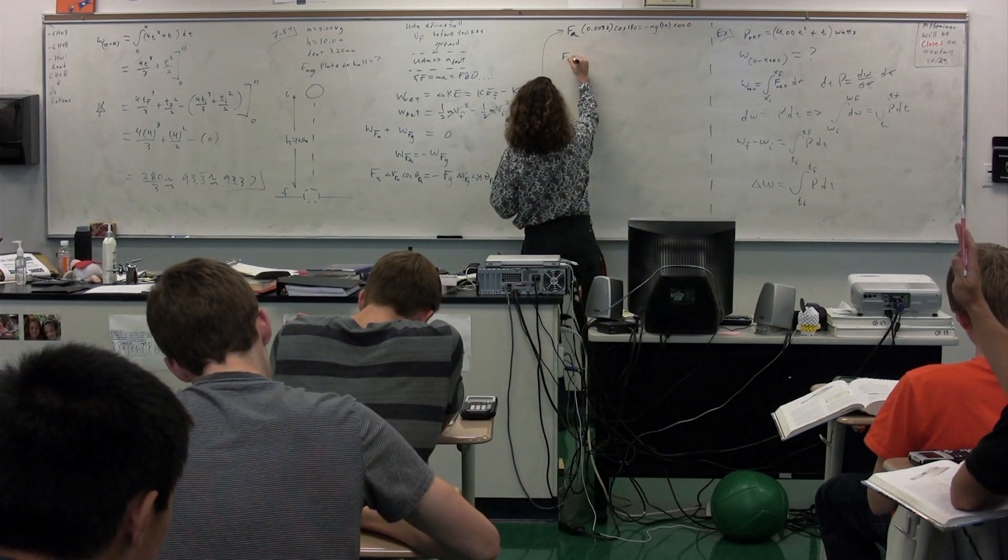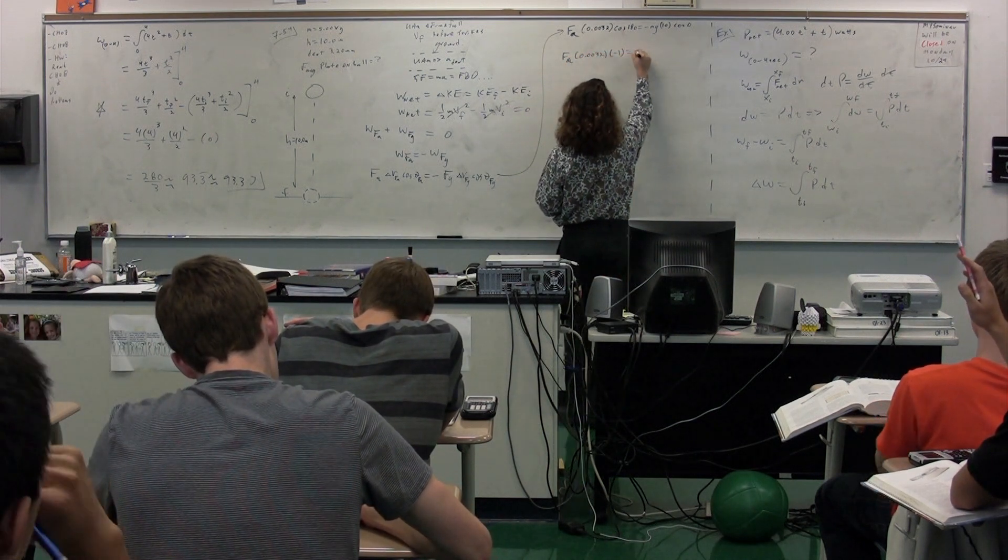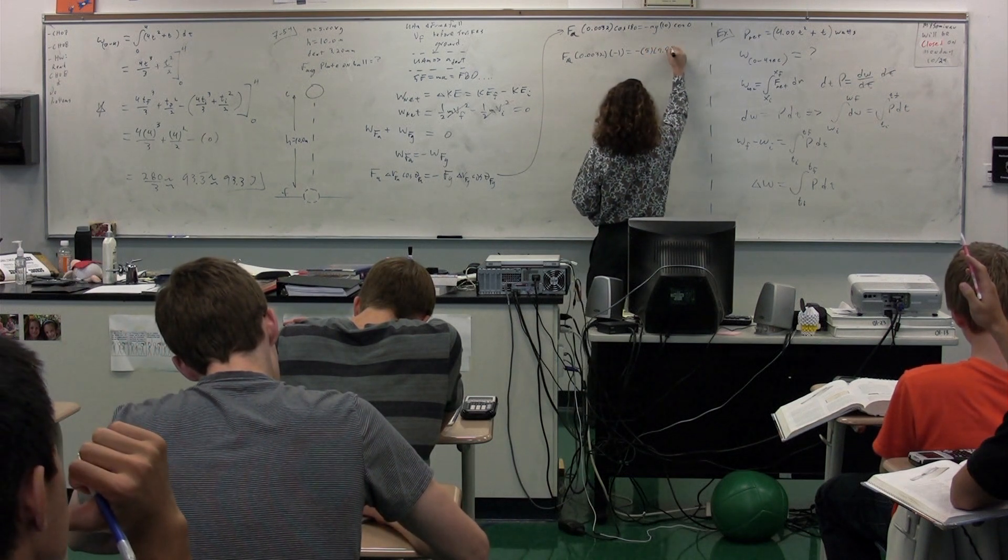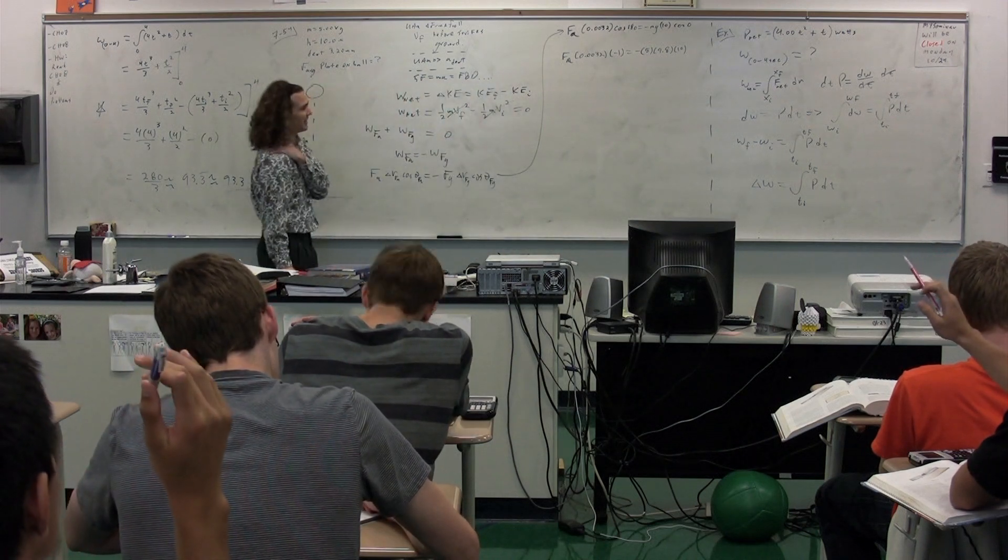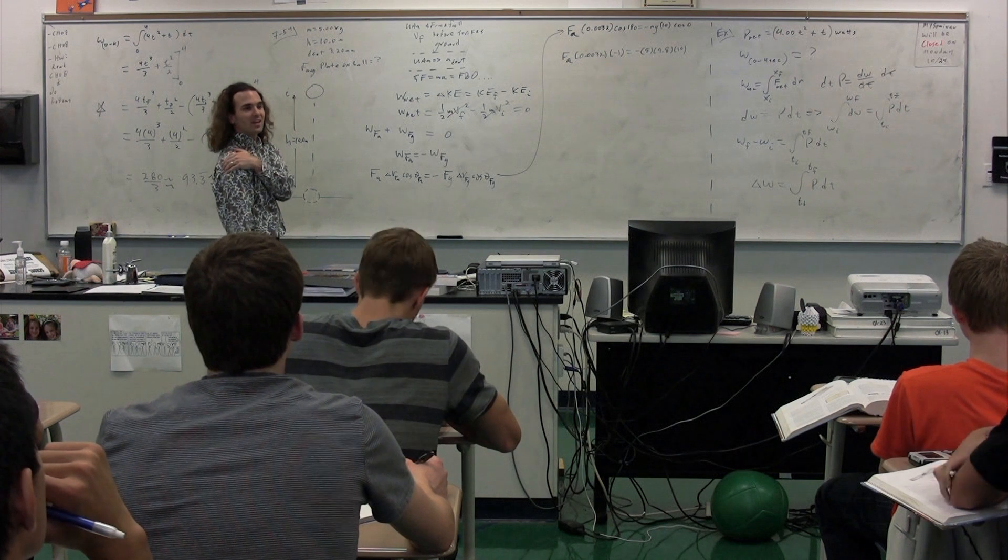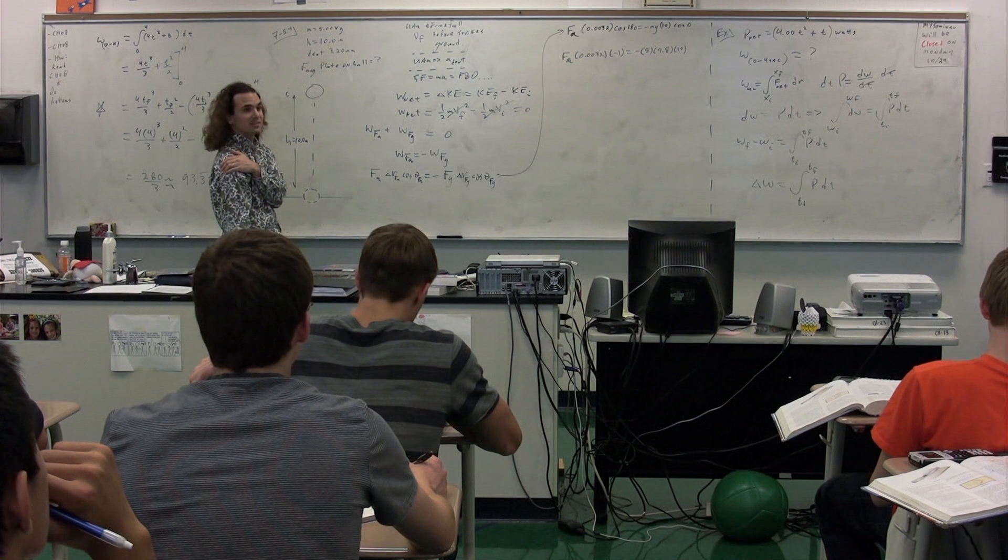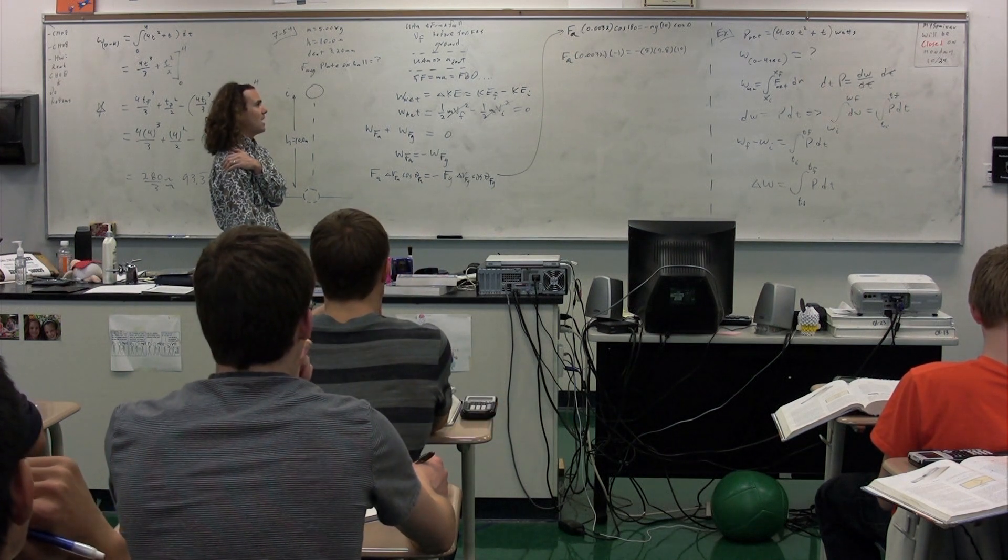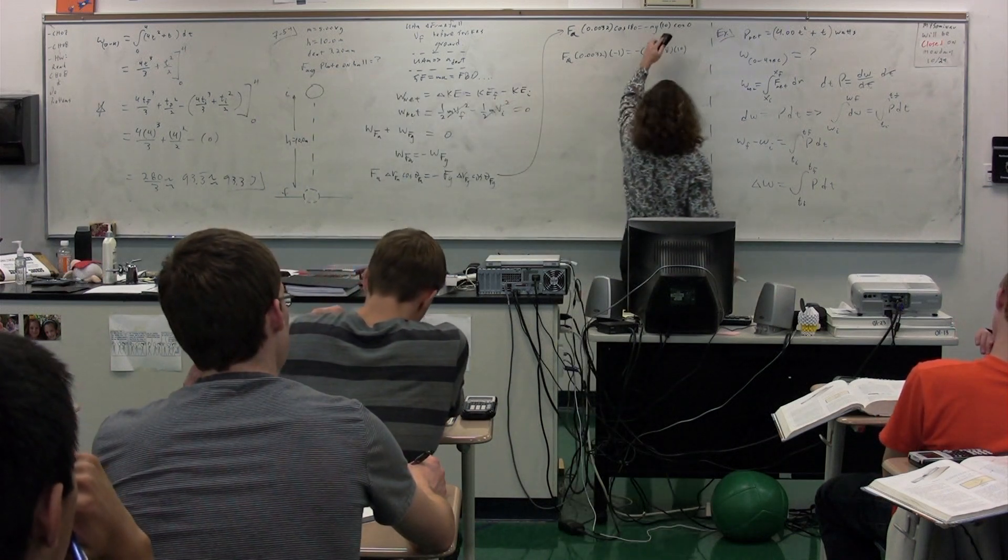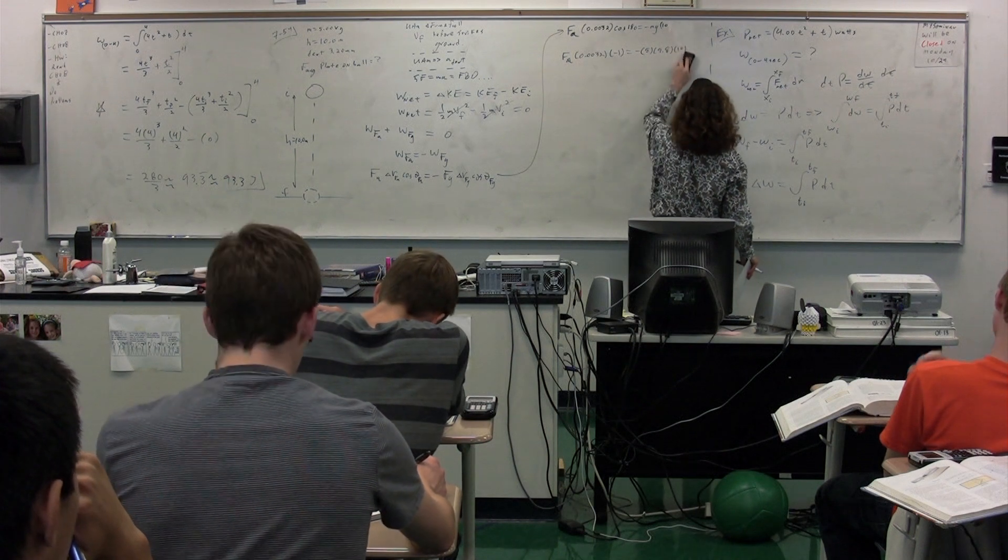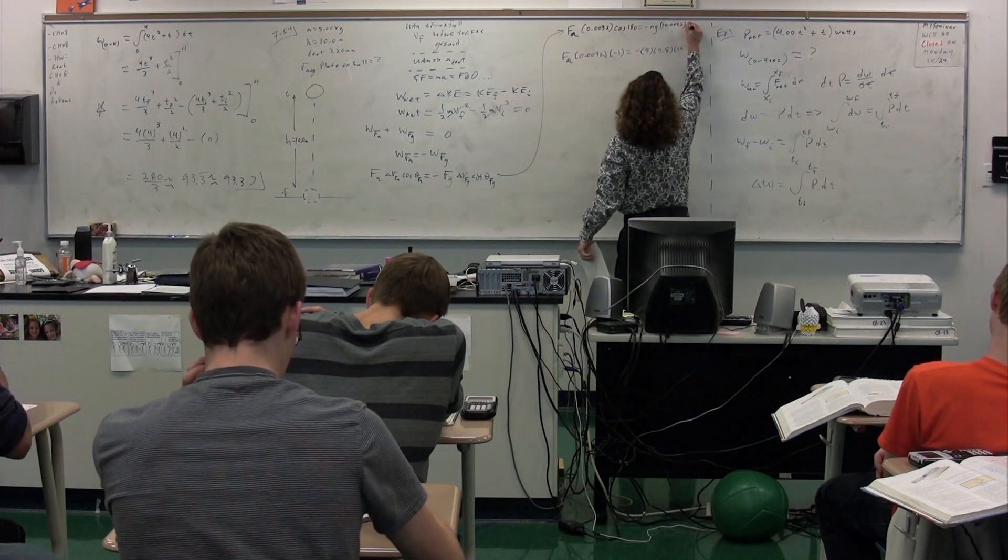So we get the force applied times 0.0032 times negative 1 equals negative mass was 5 times g, 9.8 times 10. Sir Ronald? Jenkins? For the displacement due to the force of gravity, shouldn't you include the depth? You should. Because the force of gravity is applied to the object the whole way. So you do need to include that 3.2 millimeters. 10.0032 cosine zero.